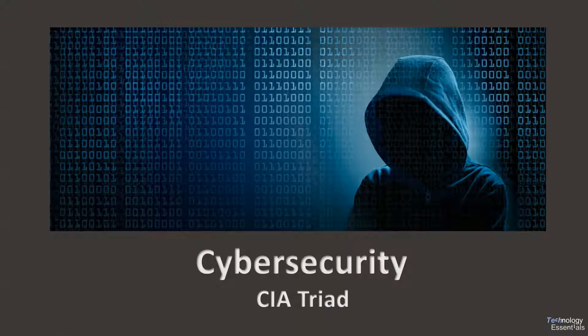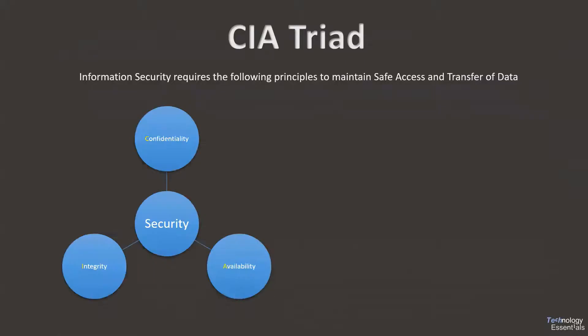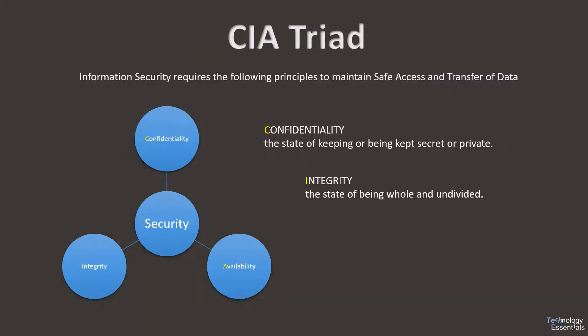Welcome to the Cybersecurity Essentials series. We will be discussing the CIA triad. These principles are very important for maintaining information security. The C stands for confidentiality, the I stands for integrity, and the A stands for availability.